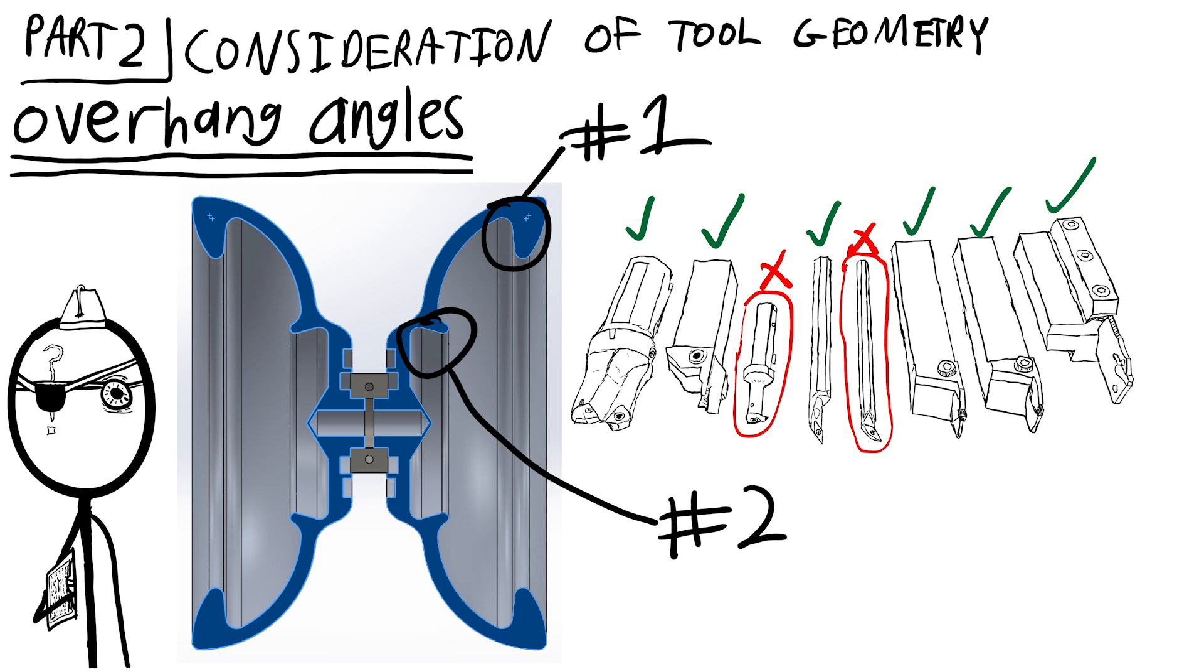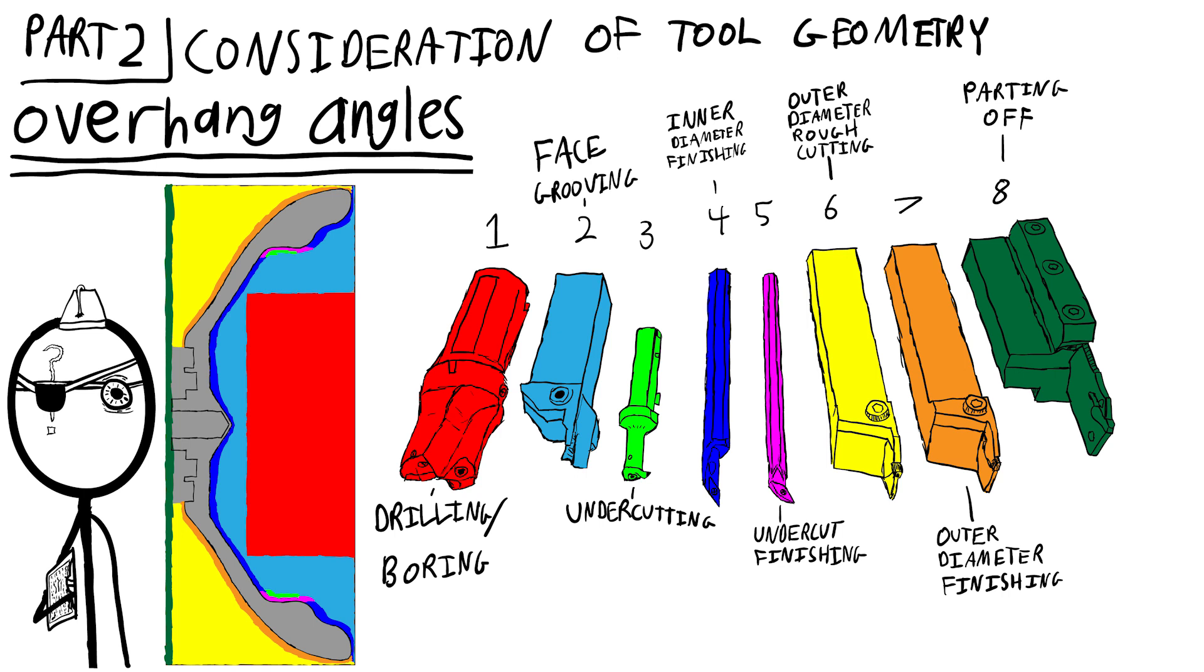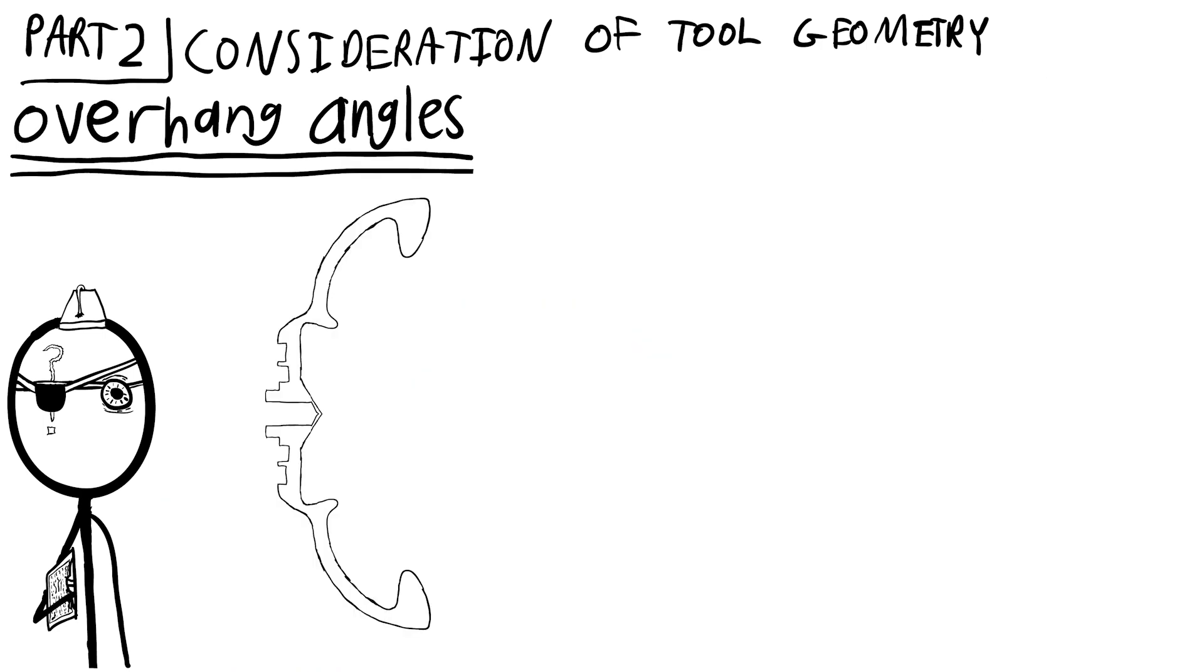These eight operations are drilling or boring, face grooving, undercutting, finishing, inner diameter finishing, undercut finishing, outer diameter rough cutting, outer diameter finishing, and the part off tool. The problem arises, going back to our previous bad design, in the undercutting operation and the face grooving operation, as the tool which is usually used to cut the undercuts usually looks a little bit like this. See the problem? It can't reach inward far enough.